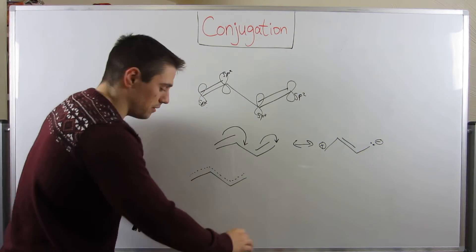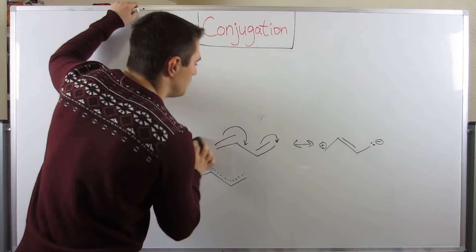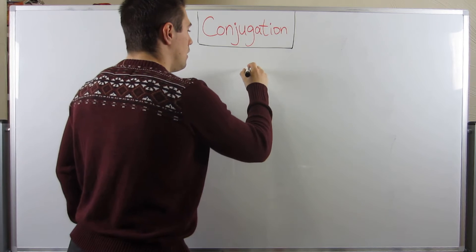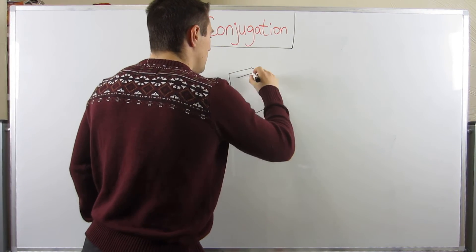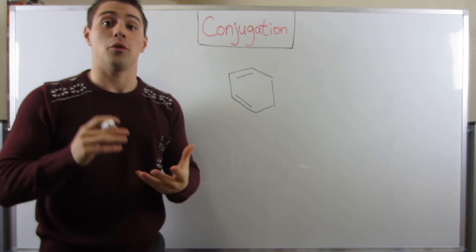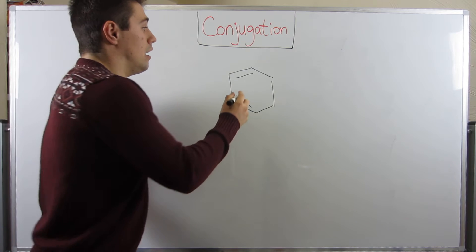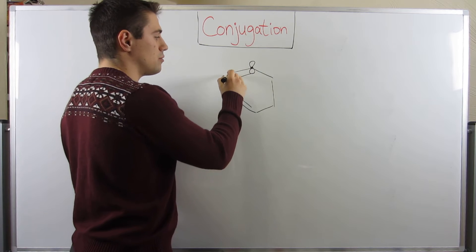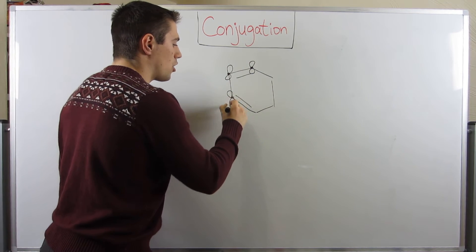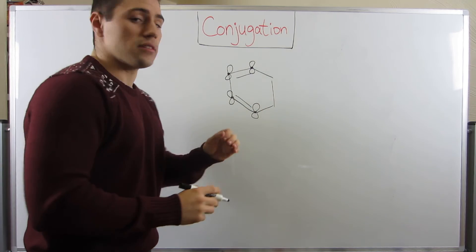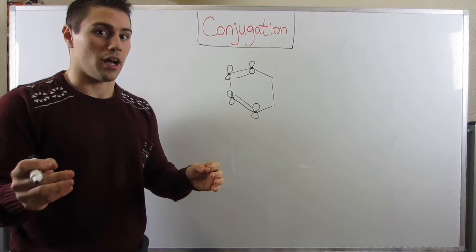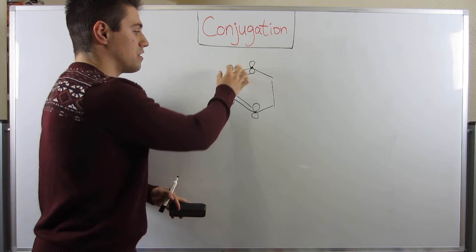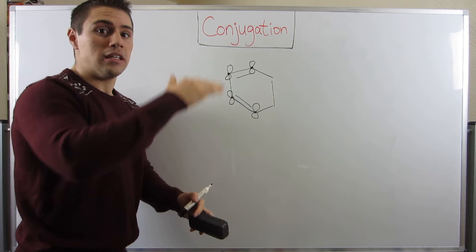Let me give examples of what is and isn't a conjugated structure. If I draw a structure where this carbon has a P orbital and is SP2 hybridized, this carbon is part of a double bond and SP2 hybridized, and so are the others — you need at least three carbons in a row to be SP2 hybridized. They all participate in this network of P orbitals, supporting delocalization of electrons. That's conjugation — a stabilizing effect that lowers the overall energy of a molecule.